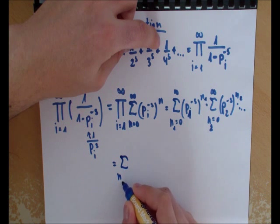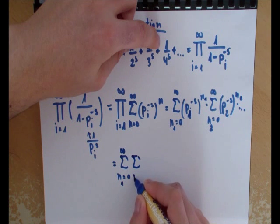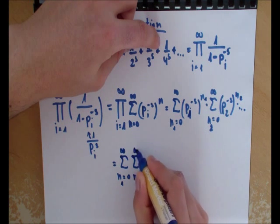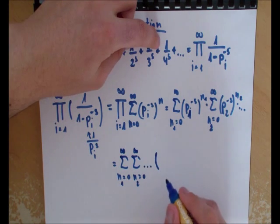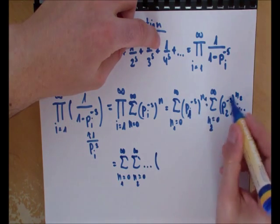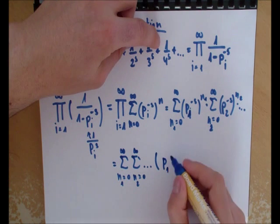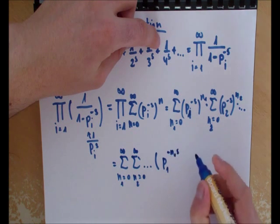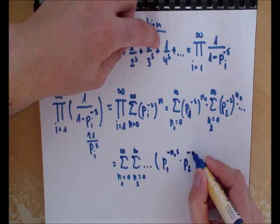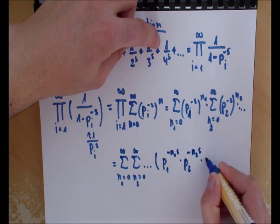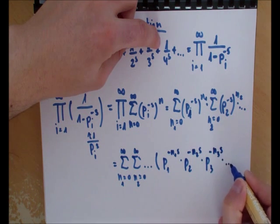I'll just start off with n_1 = 0, then here comes the other sum, n_2 = 0, and so forth. Then in the end we have a product of all these numbers: p_1^(-n_1*s) * p_2^(-n_2*s) * p_3^(-n_3*s), and so forth.